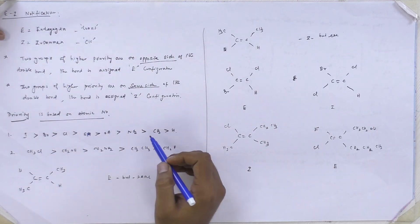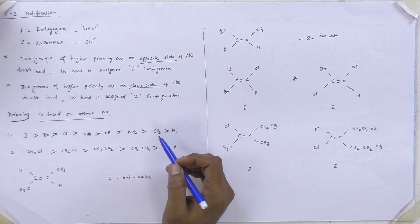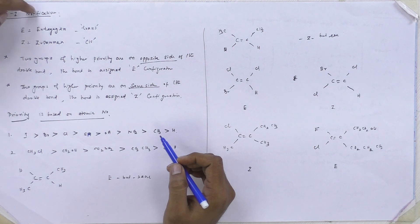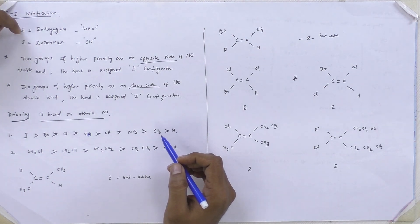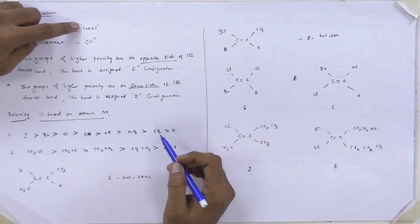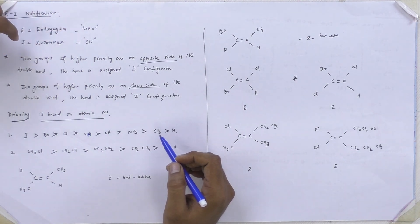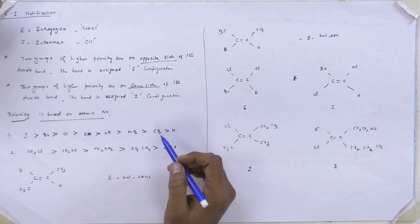The next topic is EZ notation. I am going to discuss about the EZ notation. What do you mean by E? The word E comes from a German word which means trans. Z stands for Zusammen, which means cis.